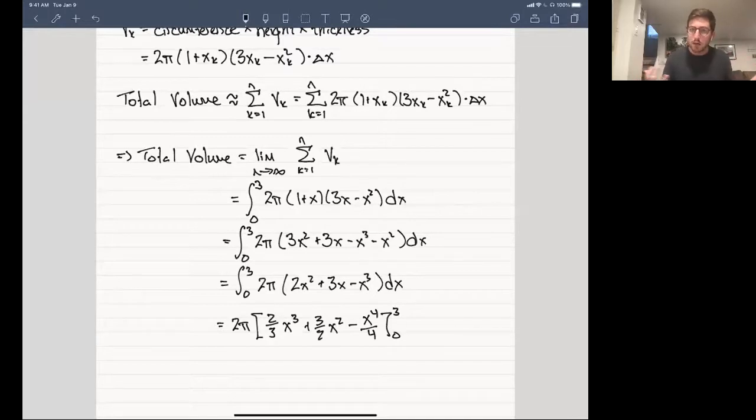Now it's a calculator problem. We take the upper endpoint 3, we evaluate the function at it, and then we subtract off the lower endpoint 0, in which case the function completely disappears, leaving us with the volume of the full solid of revolution: 45 pi over 2.